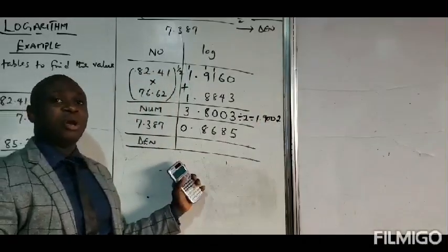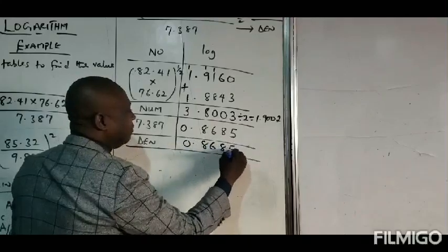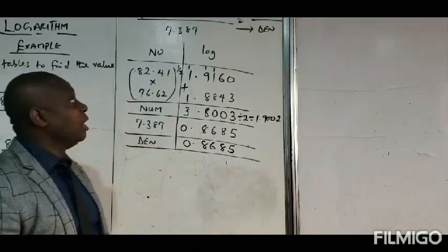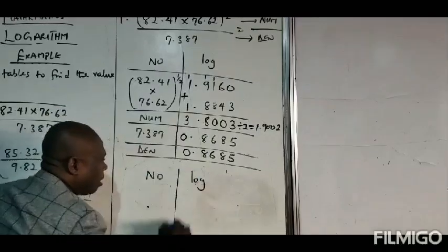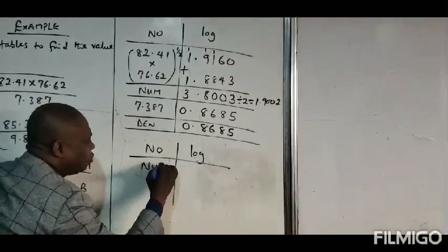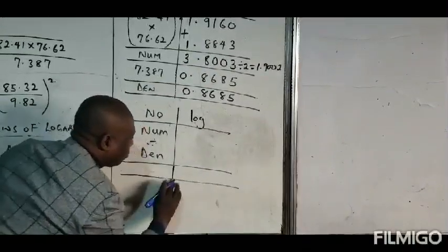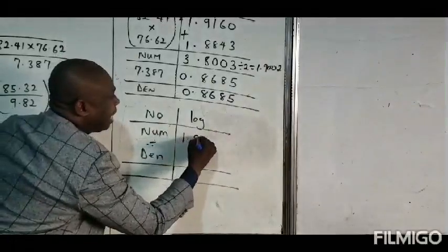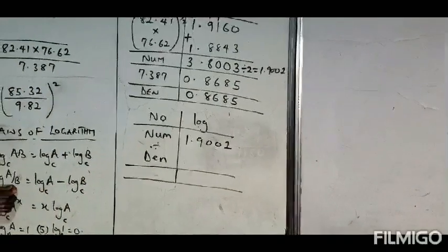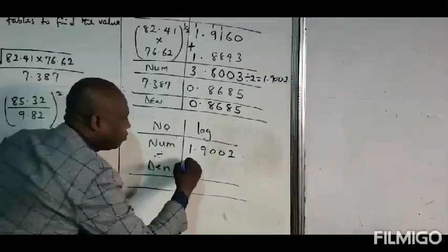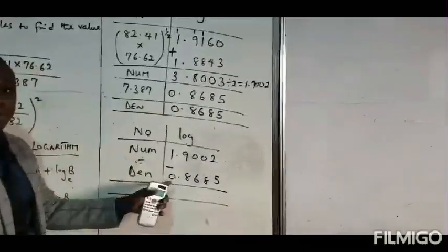For the denominator there is nothing to add or subtract, so the answer becomes 0.8685. Now for neatness I like to prepare a separate table for the overall logarithm calculation. In that table the numerator is 1.9002 divided by the denominator. Division according to the law becomes minus, so this becomes minus, and the denominator is 0.8685.